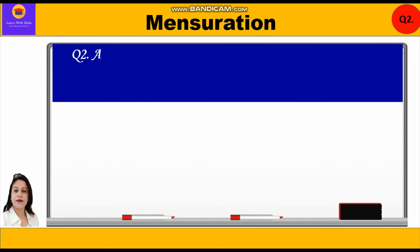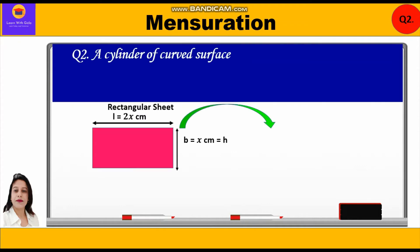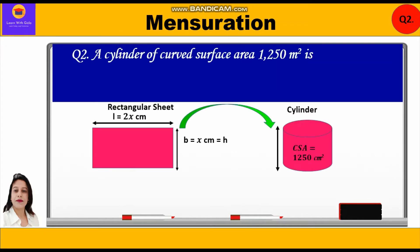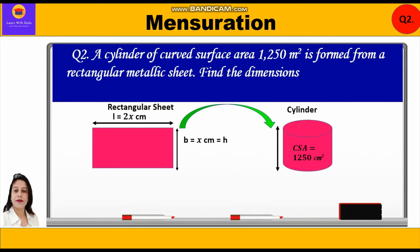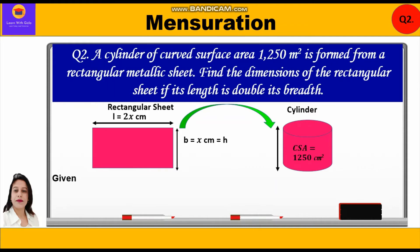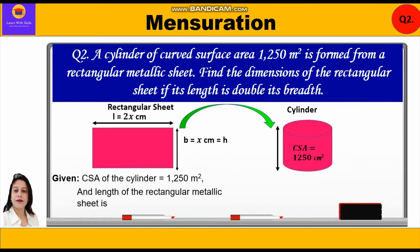Let's take up Question 2. A cylinder of curved surface area 1250 m² is formed from a rectangular metallic sheet. The length of the rectangular metallic sheet is double its breadth. Find the dimensions of the rectangular sheet, that is its length and breadth.